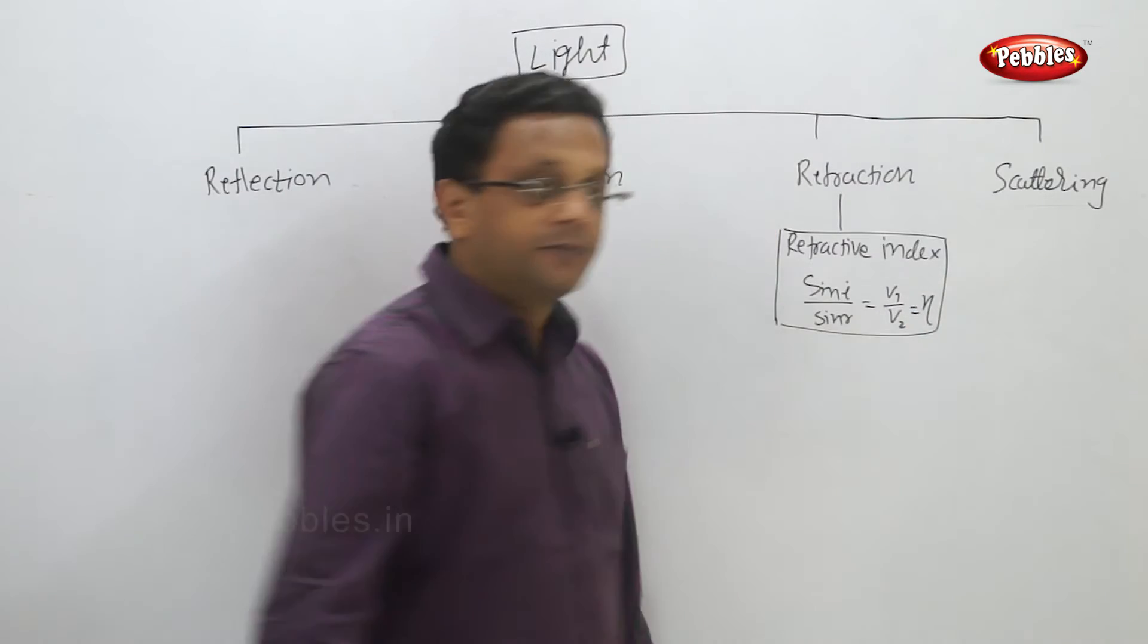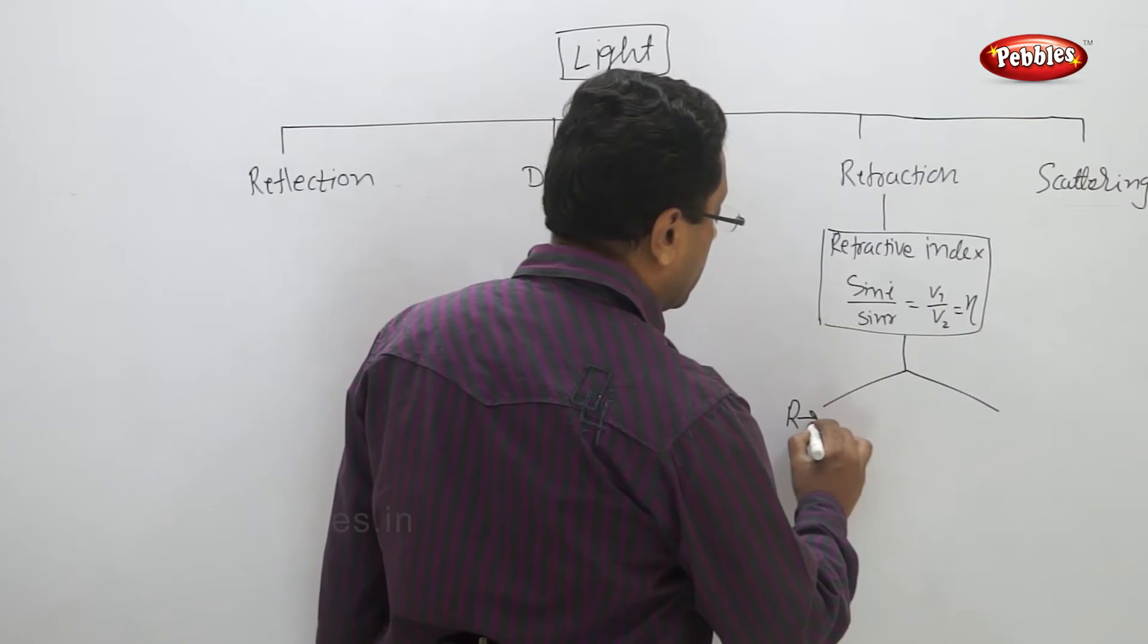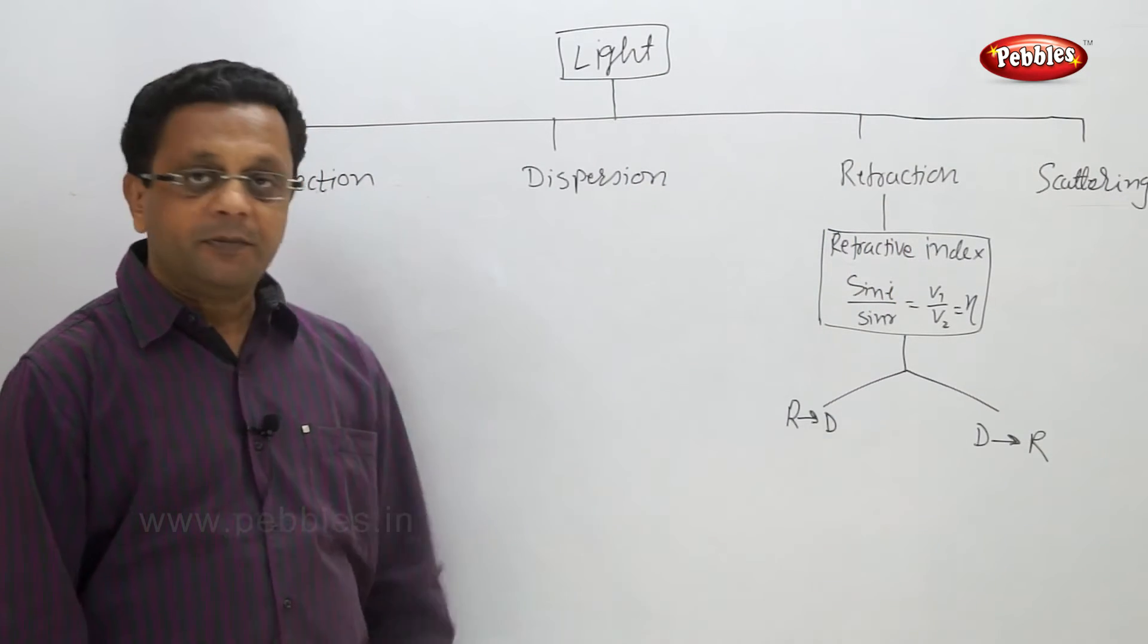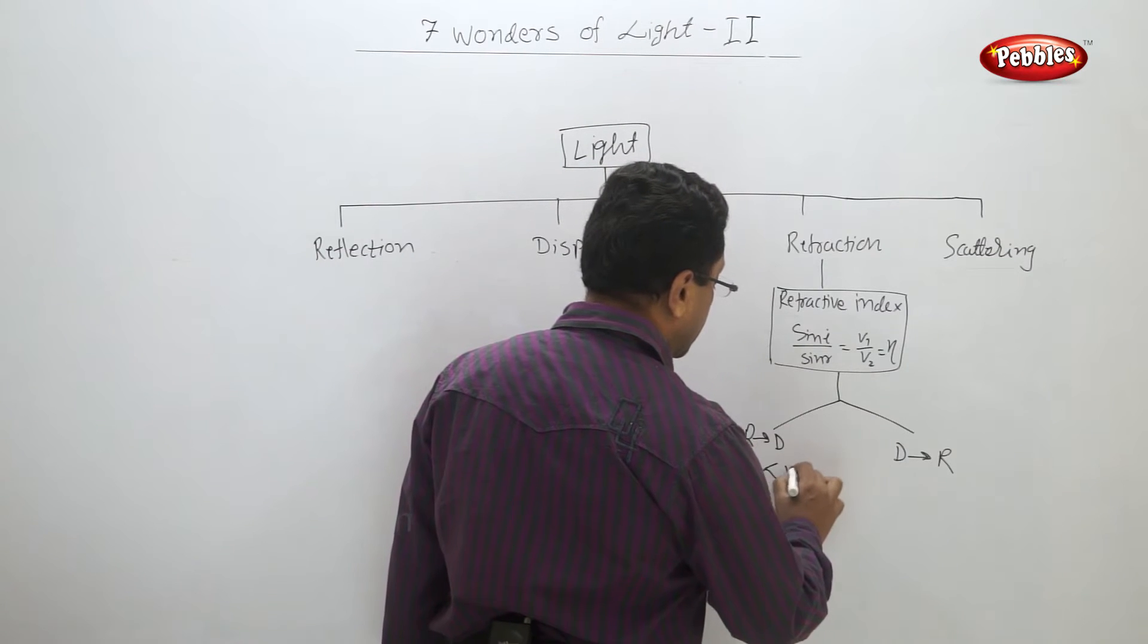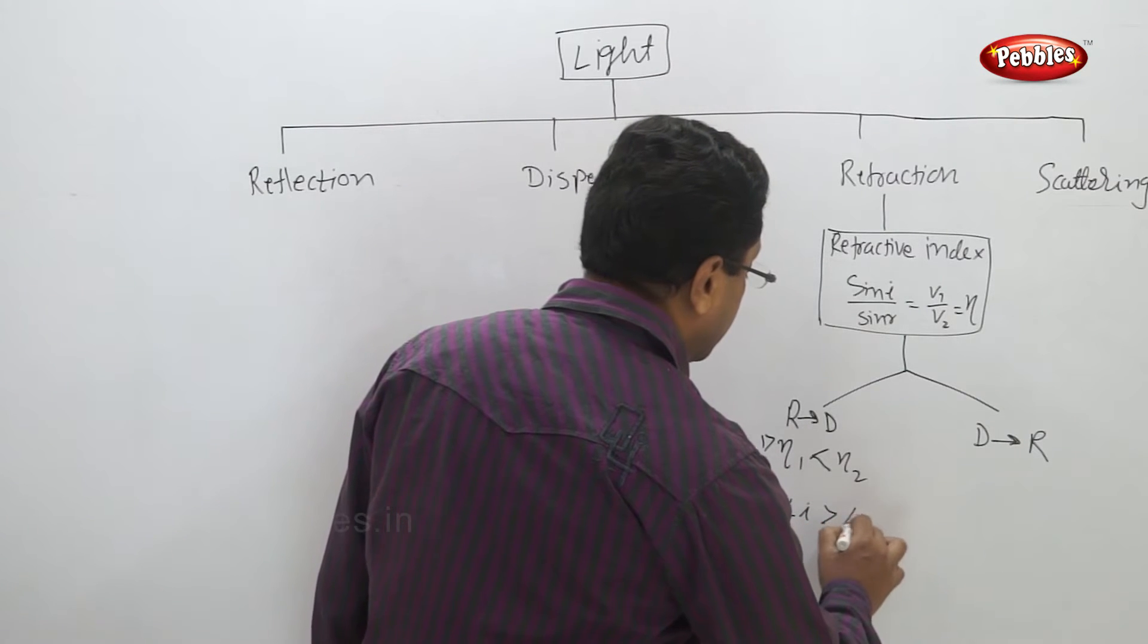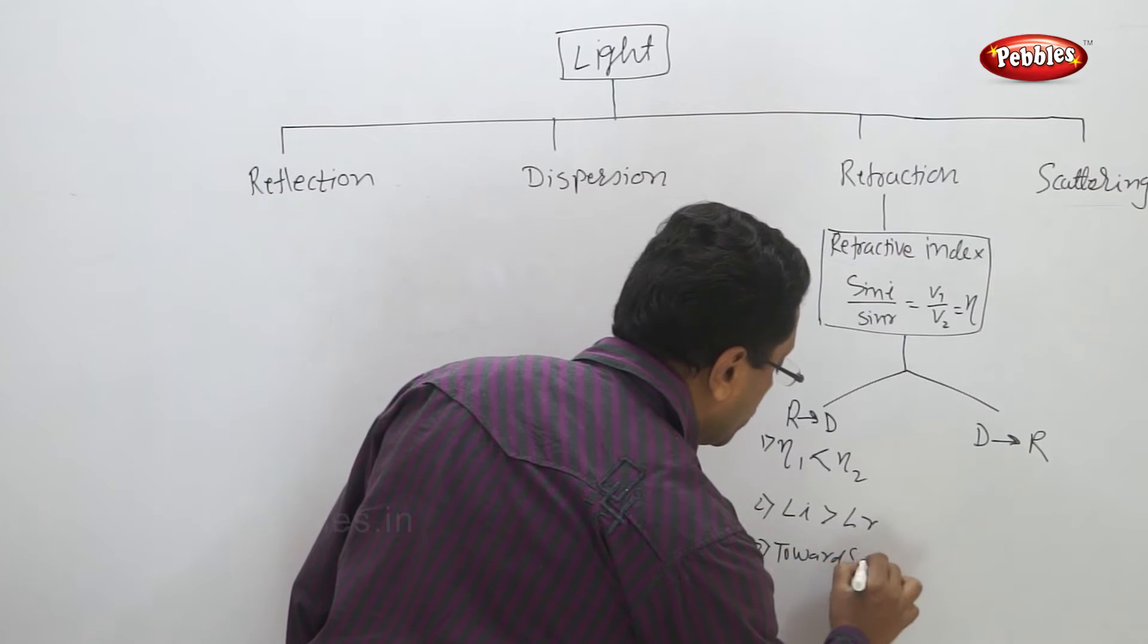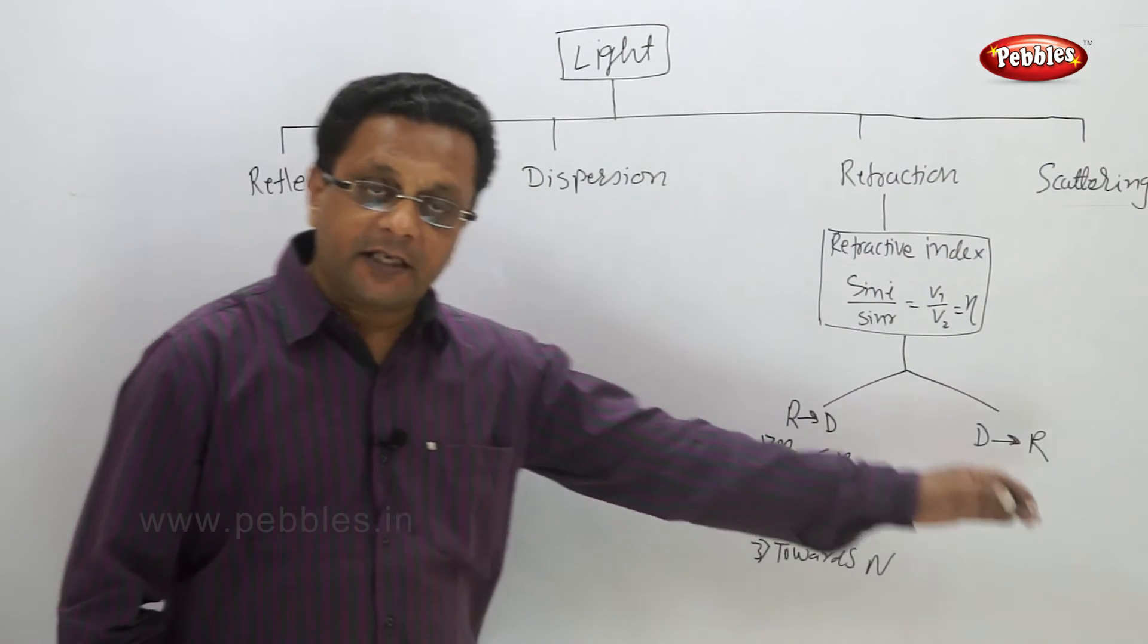So what will happen in this case? n1 is less than n2, angle i is greater than angle r, and third point is it is towards normal. Exactly opposite in this case: whenever light passes from denser medium to rare medium.